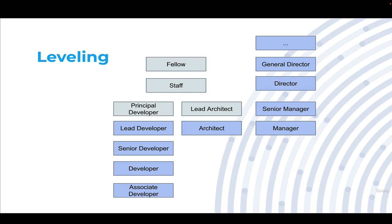Above the senior developer we have the lead developer, who is responsible for things like code reviews and in some cases managing other senior developers from a technical perspective. At this level we also start to see the job title of architect — someone less focused on coding and more on the overall system. At this same level we see the first-level manager. In companies with actual leveling systems, associate developer is level one, developer level two, senior developer level three, and lead developer level four.